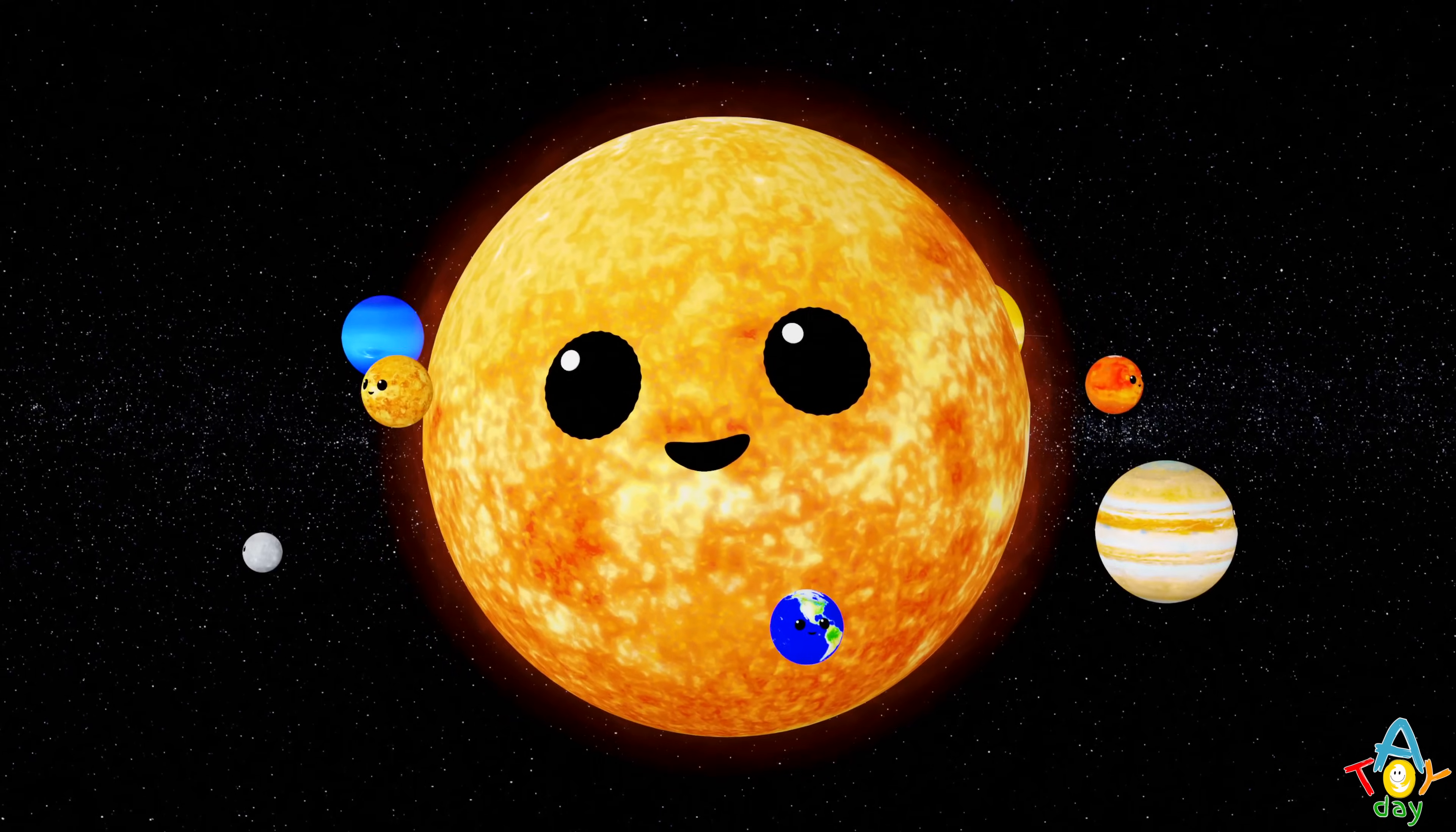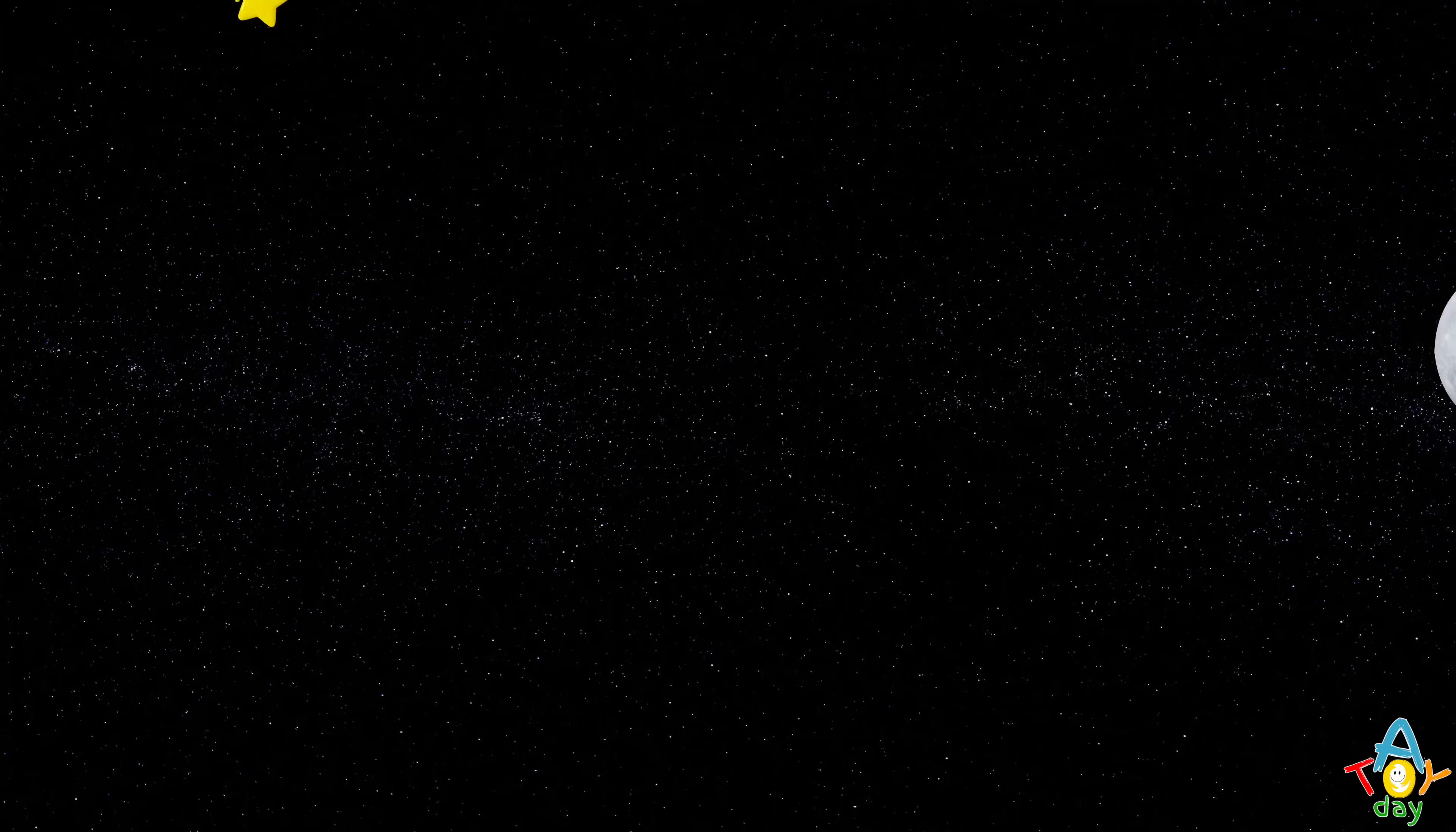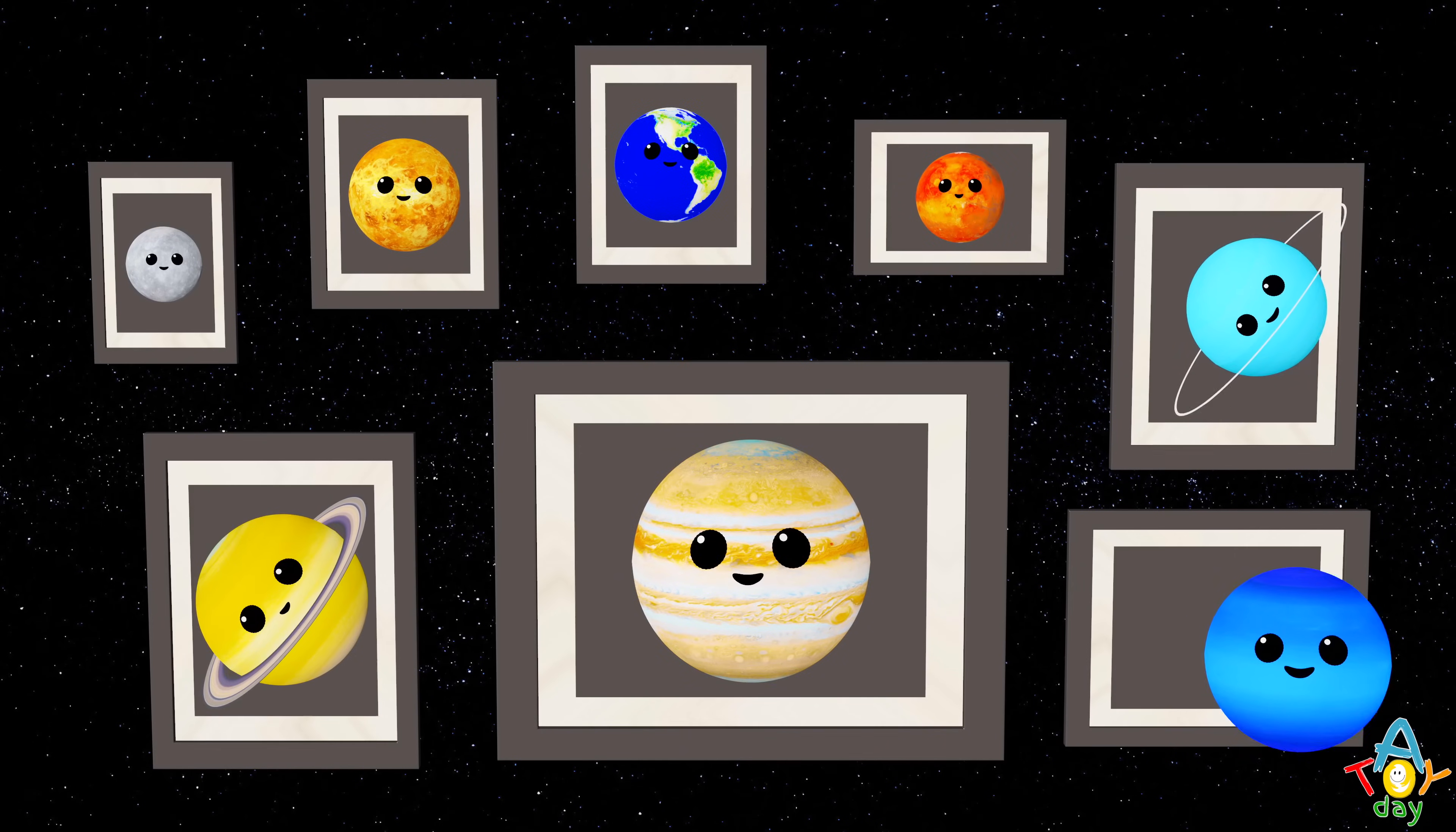The planets go round, around the sun. Spinning and turning, having fun. From Mercury to Neptune, come and see. They're part of our space family.